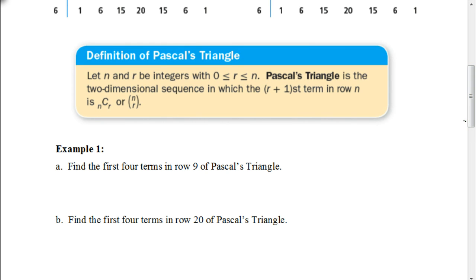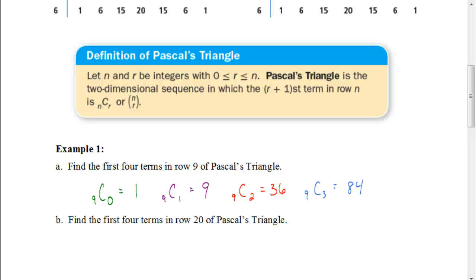For example, if you're asked to find the first four terms in row 9 of Pascal's Triangle, the first term is 9 choose 0, which is 1. The next term is 9 choose 1, which is 9. Then we have 9 choose 2, which is 36. And to find the fourth term, it would be 9 choose 3, which is 84. You can do those on your calculator — make sure you watch the previous video to see how. Now pause the video and try to find the first four terms in row 20 on your own.